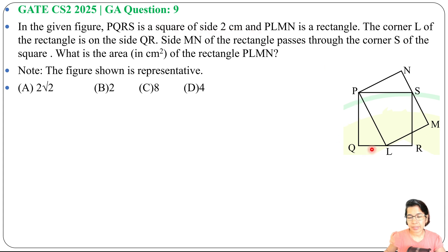This is the figure where each side is 2 cm, and PLMN is a rectangle. The corner L of the rectangle is on the side QR. Side MN of the rectangle passes through the corner S of the square.